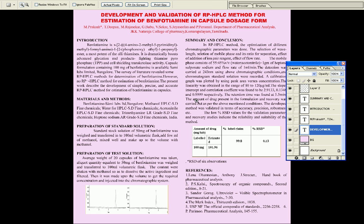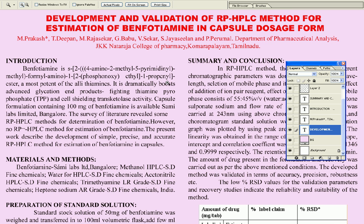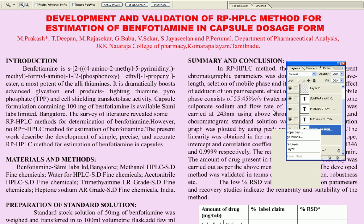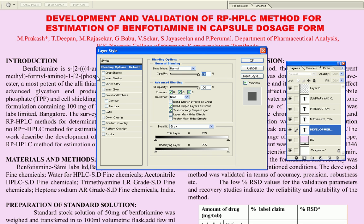To see the heading only, we are selecting and zooming in on the portion using the Z key to zoom into the heading only. Then we come to layers and select the blending options.